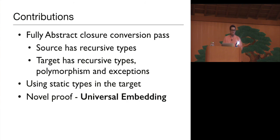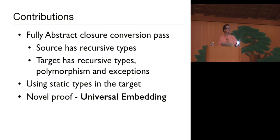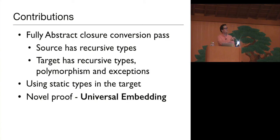That brings us to the contributions of our paper. We proved a closure conversion pass fully abstract, where the source and target have recursive types and the target has polymorphism and exceptions, while the source is simply typed. We use static types in the target to ensure this full abstraction. More important than the specific details of this source and target language is the way we proved it, which I call a universal embedding.